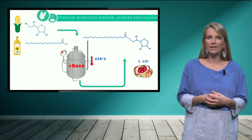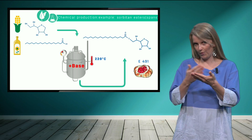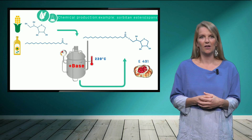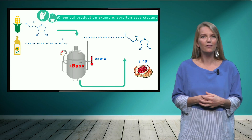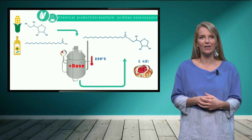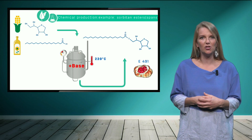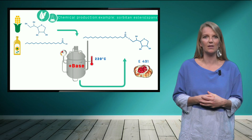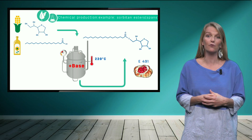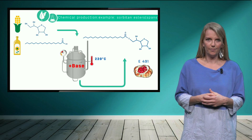For example, the E number you might see on some of your food wrappers — the E number E491, which is shown in the figure — is a sorbitan ester which is used as an emulsifier and stabilizer in foods.